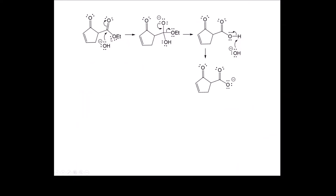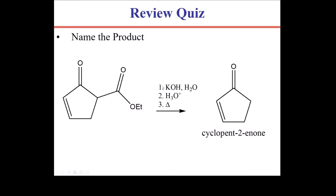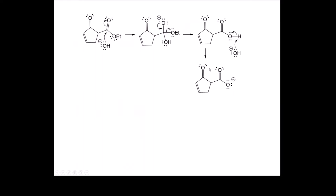The saponification reaction is the base-catalyzed hydrolysis of an ester, one of the reactions we looked at in chapter 20 on carboxylic acid derivatives. The hydroxide plugs into the carbonyl group to form the tetrahedral intermediate. The electrons collapse back down and bump off the ethoxide as a leaving group, forming a carboxylic acid. Under basic conditions, the carboxylic acid is deprotonated to give the carboxylate. If we only added potassium hydroxide in water, the reaction would stop at the beta-keto carboxylate.